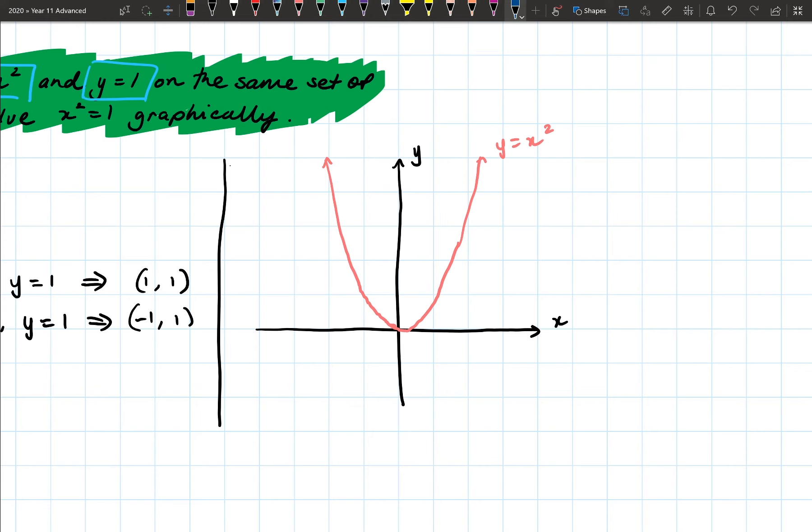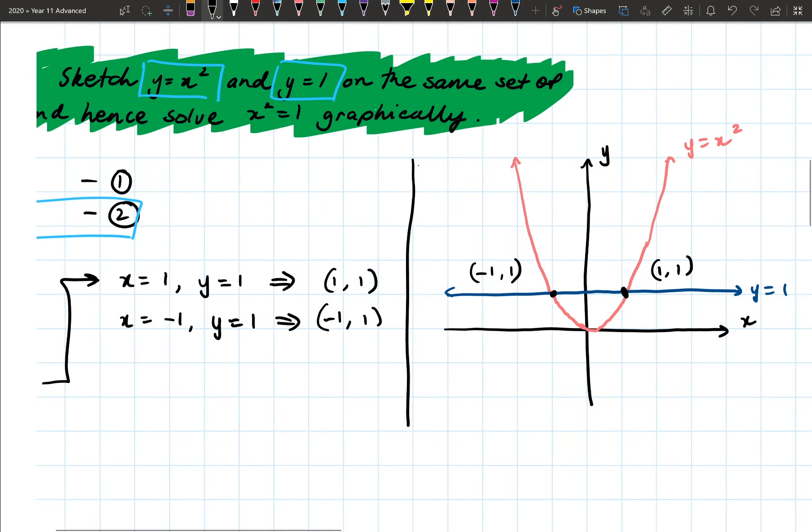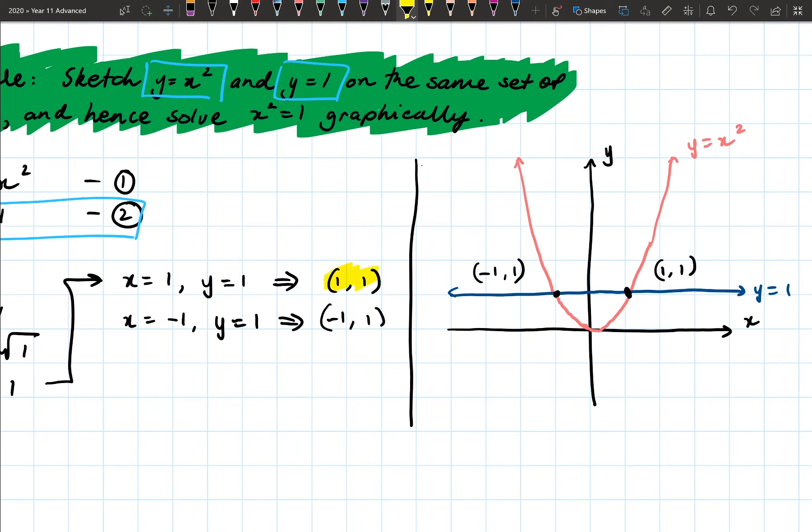Now that I've done that, I'm also going to sketch onto my same Cartesian plane, y equals one. Now y equals one, if you remember, we had a look at this when we were looking at linear functions. But this is basically the line where every value for y is going to be one. And it doesn't matter. So what you notice here is that there's no x values involved in this equation. So what it's going to look like, it's actually going to look like a straight horizontal line at y equals one.